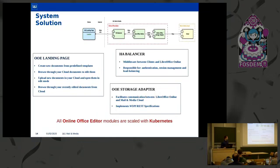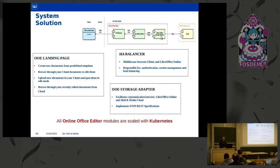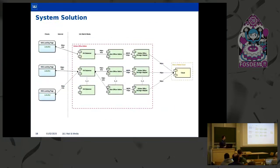The middleware is also responsible for authentication, load balancing, and session management. We have the LibreOffice Online component that allows us to edit files. And finally, we have the storage adapter component, which implements the WOPI REST specifications and facilitates communication between LibreOffice Online and the cloud. This module allows us to upload files edited in LibreOffice Online to Mail and Media Cloud, and to download them from Mail and Media Cloud for editing. All Online Office Editor modules are deployed in Kubernetes, which allows us to scale modules based on our needs or the traffic the application receives.